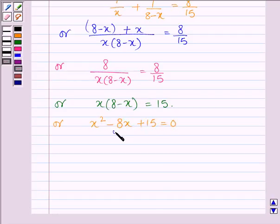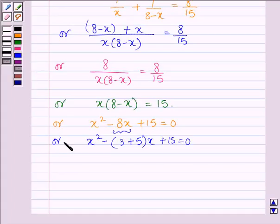Now splitting the middle term, it can further be written as x² - (3+5)x + 15 = 0, or we have x² - 3x - 5x + 15 = 0.